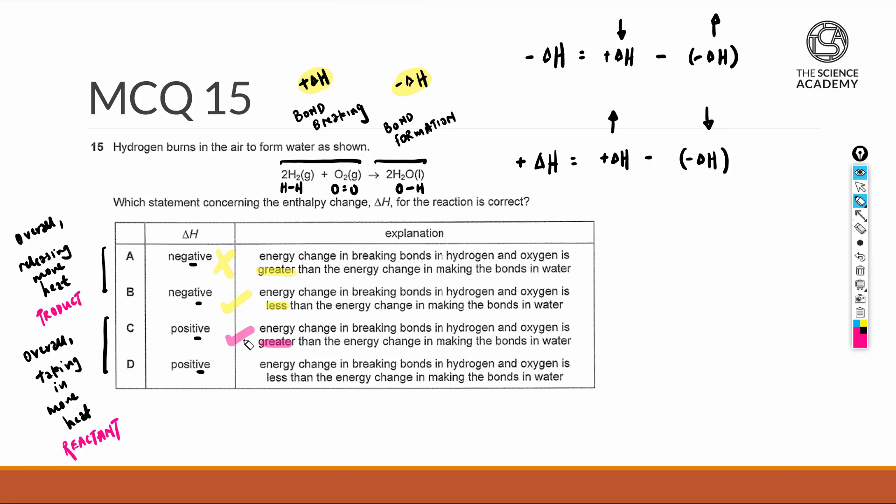And the last one here is energy change in breaking bonds in hydrogen and oxygen is less than that of making the bonds in water. So this again is going to be wrong if we're going to align the whole exothermic idea.